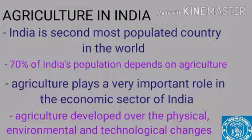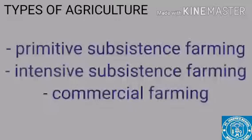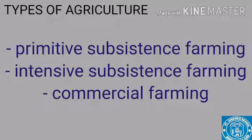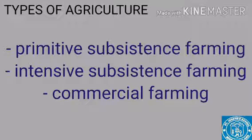Now we will learn what are the different types of agriculture. There are three types of agriculture: primitive subsistence, intensive subsistence, and commercial farming. These are the three types of farming that Indians practice in different parts of India. Now let's discuss them one by one.